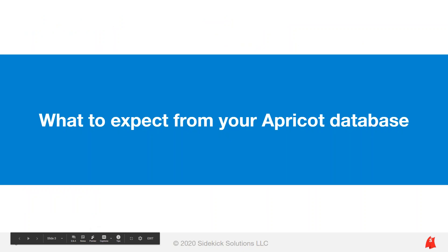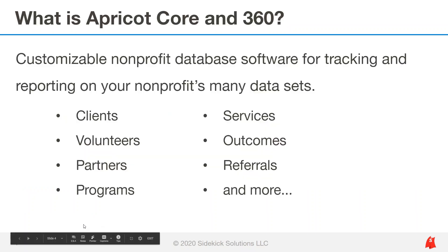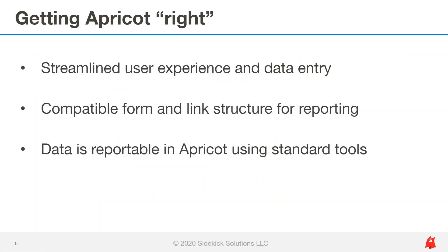Let's start by reviewing what you should expect from your Apricot database. Social Solutions' Apricot Core and 360 software is an online database software designed specifically for nonprofits to track and report on a variety of data sets, including clients, programs, services, outcomes, volunteers, and more. Apricot is a fundamentally flexible and scalable platform. You can configure Apricot to match your organization's specific workflow, program model, and reporting requirements, saving you time on service delivery, data management and reporting, and maximizing the return on investment of the tool.